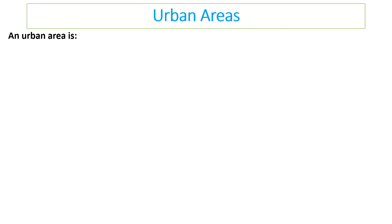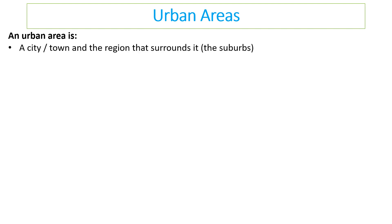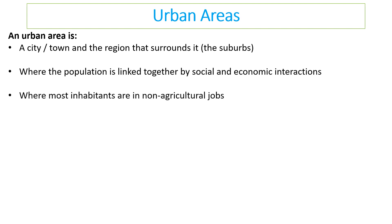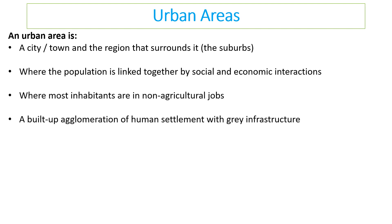First of all, we need to know what an urban area is. An urban area, hopefully pretty obviously, is a city or town and the region that surrounds it, which we call the suburbs. It's where the population is linked together by social and economic interactions, where most inhabitants are in non-agricultural jobs. It's a built-up agglomeration.